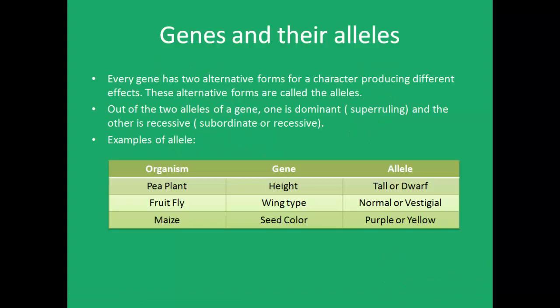Every gene has two alternative forms for a character, producing different effects. These alternative forms are called the alleles. For example, the gene for eye color has several alleles, such as an allele for blue eye color or an allele for brown eye color. Out of the two alleles of a gene, one is dominant — that is, super-ruling or the one that is expressed — while the other is recessive or subordinate.